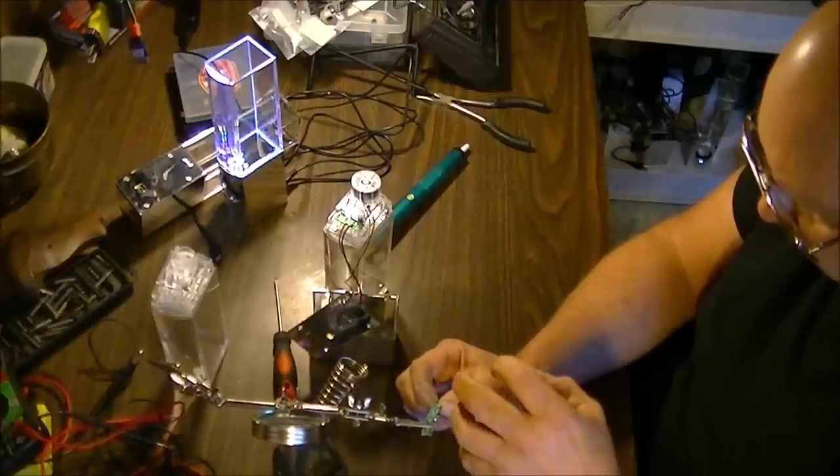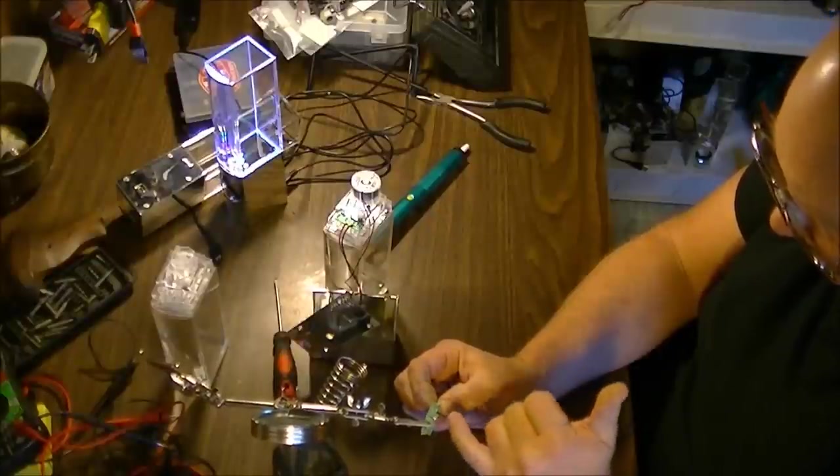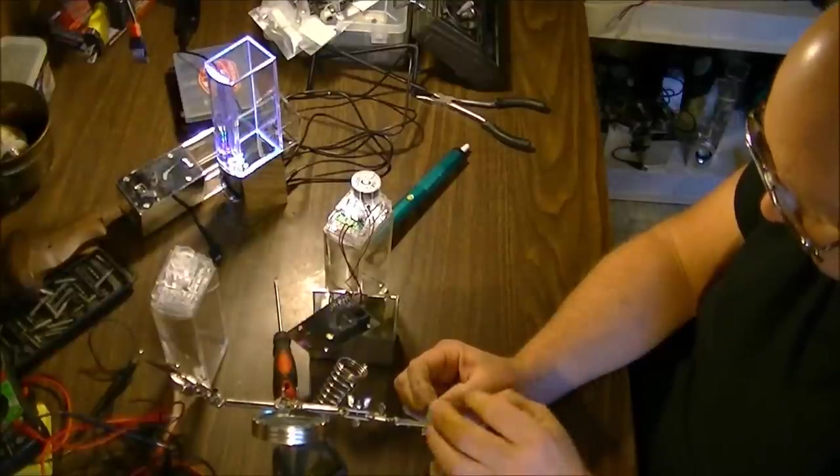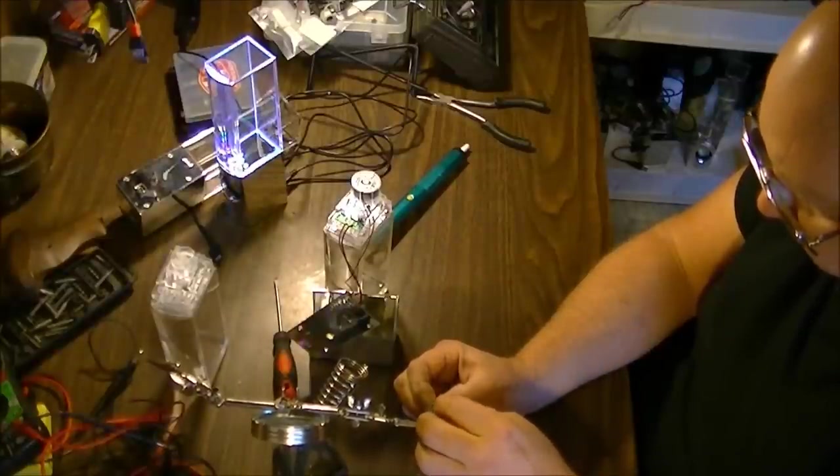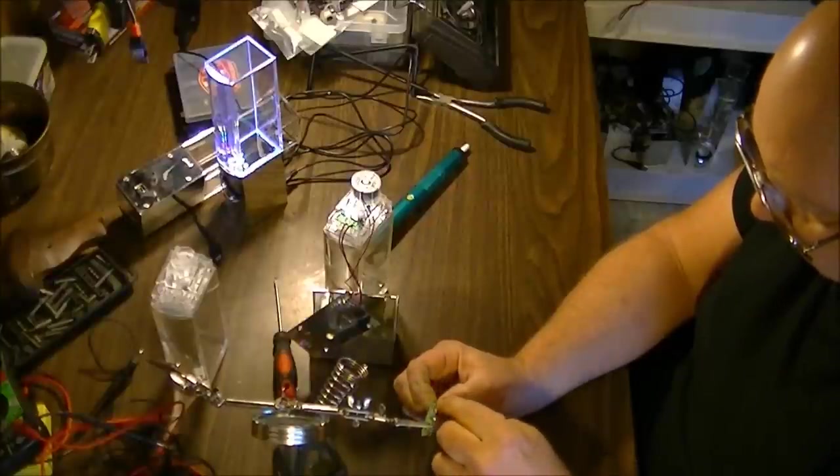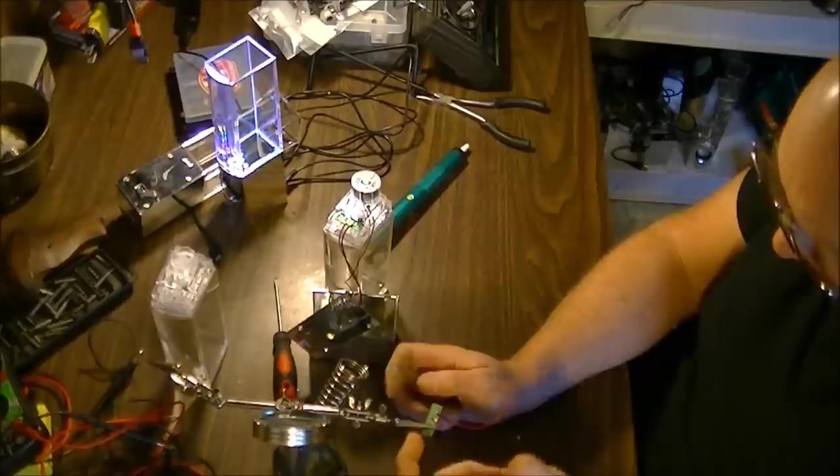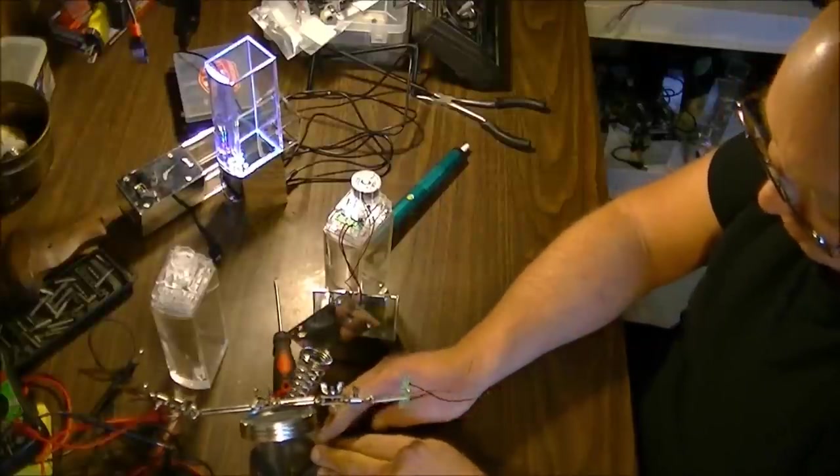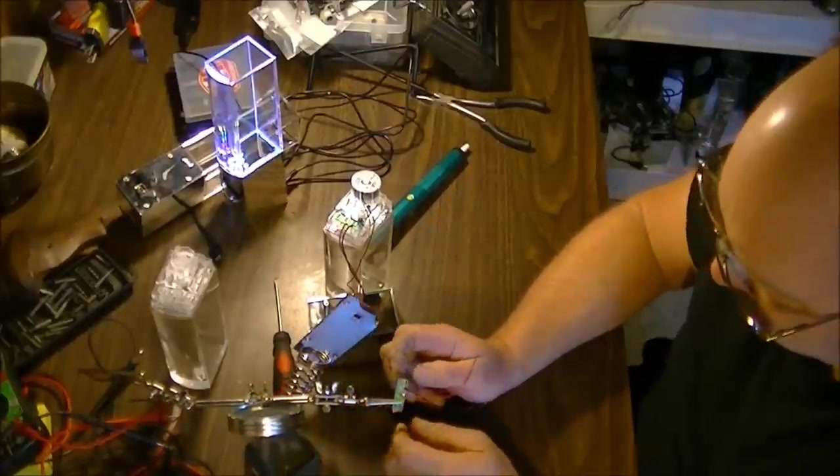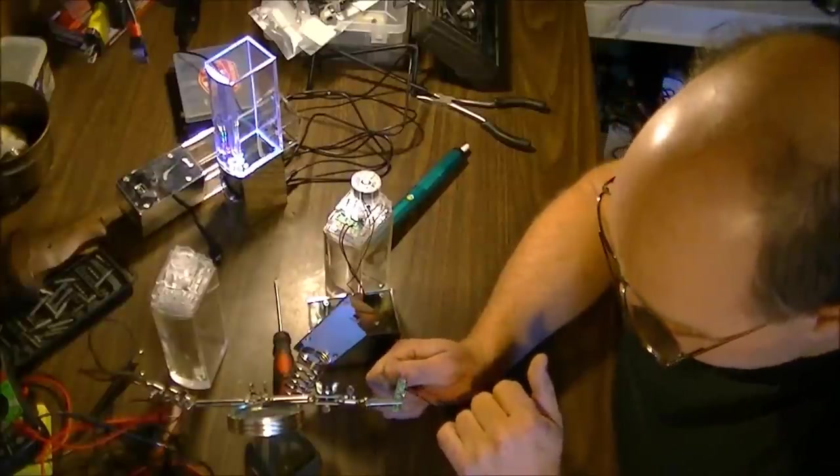You can do this without a solder sucker if you're really good with it. Grip the bulb firmly, pinch between your fingers, heat the two contacts at the same time as you're pulling down at it and pushing up on the board with your fingers. It's kind of a tricky maneuver, but you can do it.